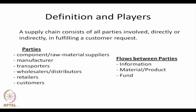What is a supply chain? A supply chain consists of all parties or players involved directly or indirectly in fulfilling a customer request. The parties include: suppliers of components or raw materials, manufacturers, transporters, wholesalers or distributors, retailers, and customers. Between any 2 parties, there are 3 types of flows: flow of information (including order flow), flow of material or product, and flow of cash or funds.